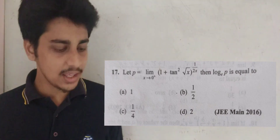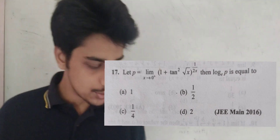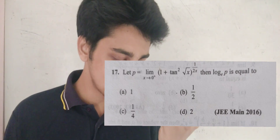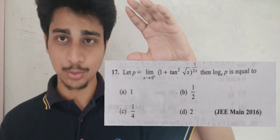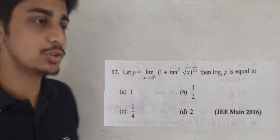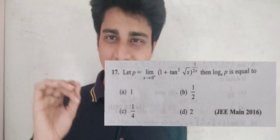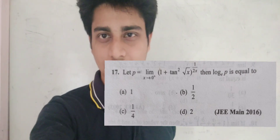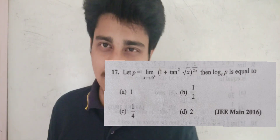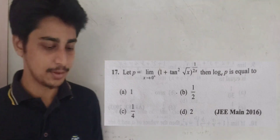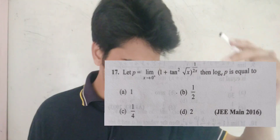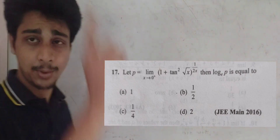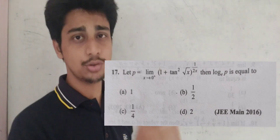For example, let t equal to limit x tending to 0 of (1 + tan√x)^(1/2x). The question we have is: what format do we need to apply? We will look at (1 + tan√x)^(1/(2×0)).